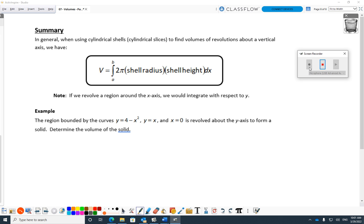So here's the formula. In general, when using cylindrical shells, you go volume equals A to B, 2 pi, shell radius, shell height, dx, could be dy depending on which way you're going. We found out dx was the way to go when the shells are going this way. If the shells are going vertically, we'd go dy.